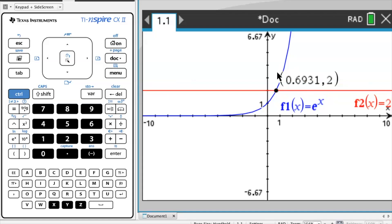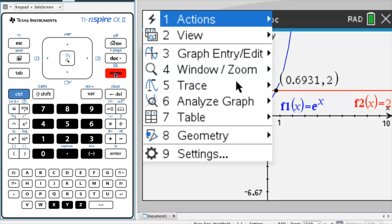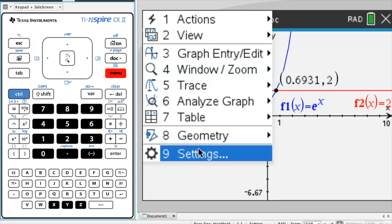However, if you want to increase the number of significant figures here, what you could do is go to Menu, and then Settings.